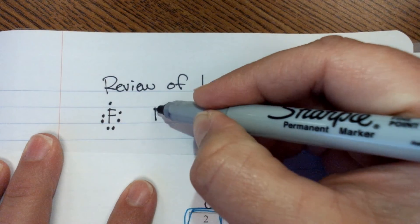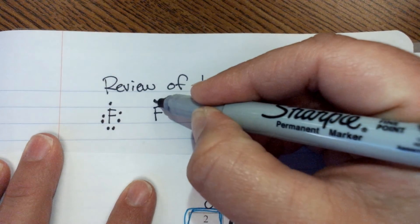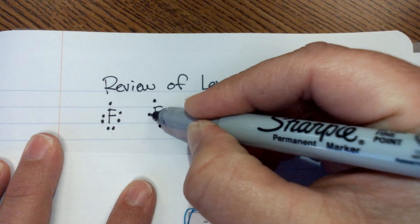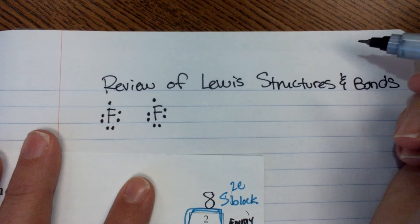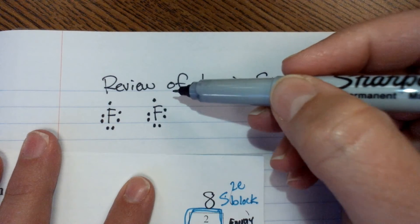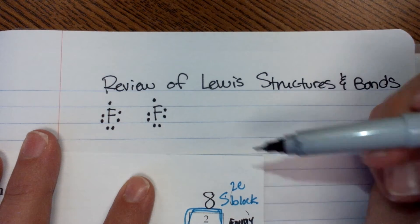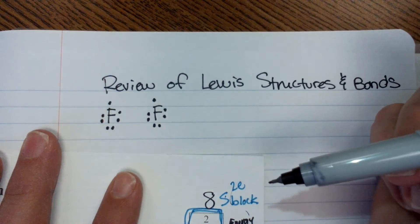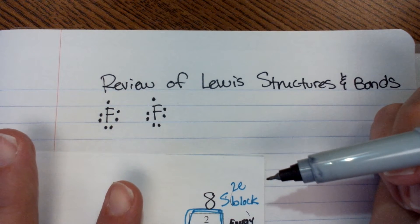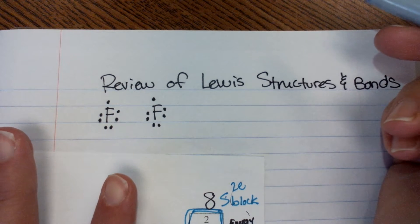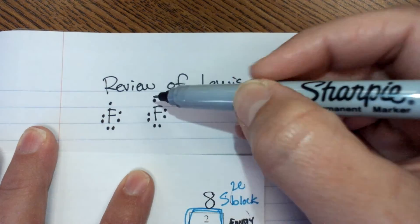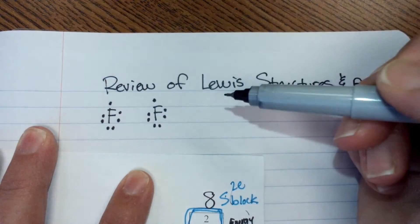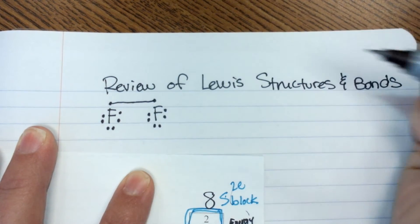So if I have another fluorine atom, and I say one, two, three, four, five, six, seven. All right, what can happen with Lewis structures? How many bonds can a fluorine atom make? Let's review that. Just one. So these two lonely electrons, this electron here is lonely, it doesn't have a buddy. This one too. These guys can make a bond.